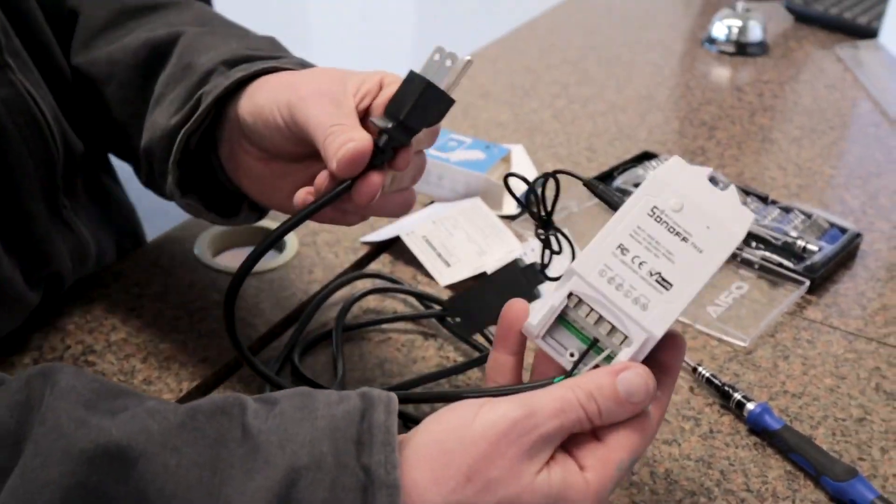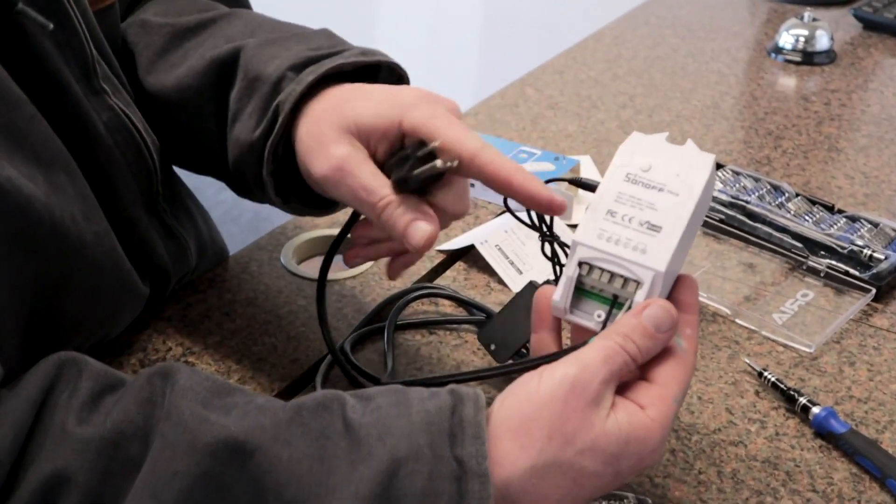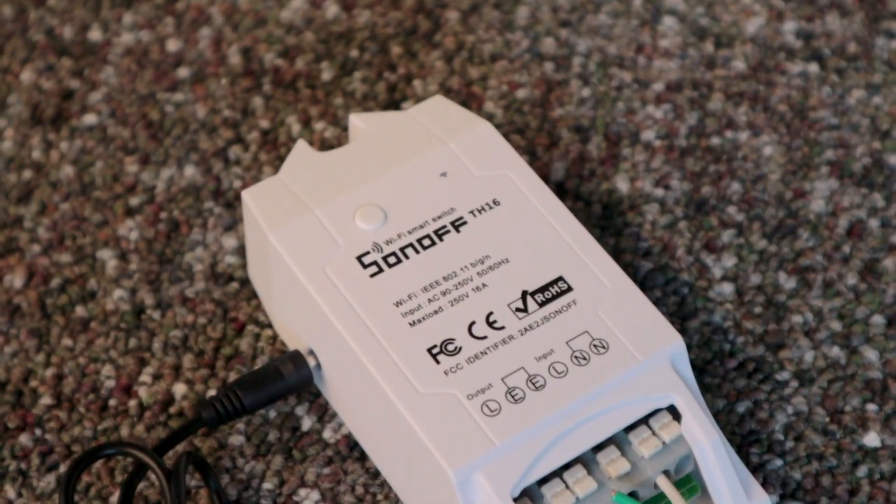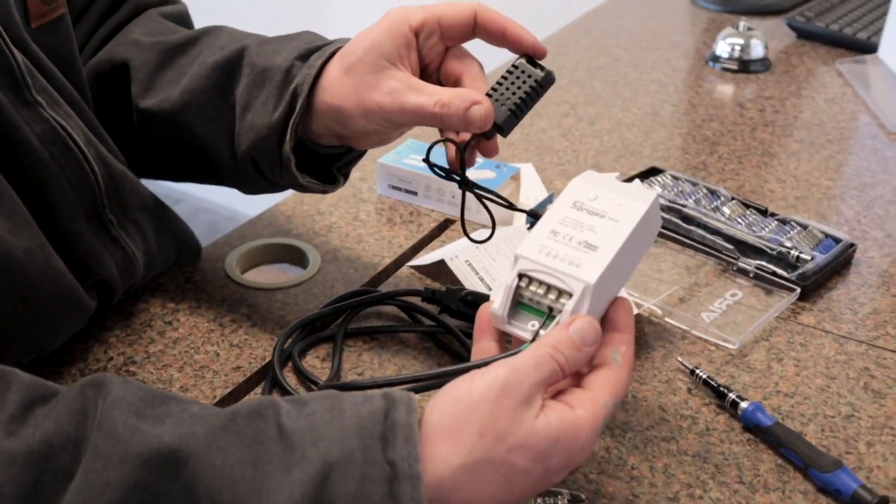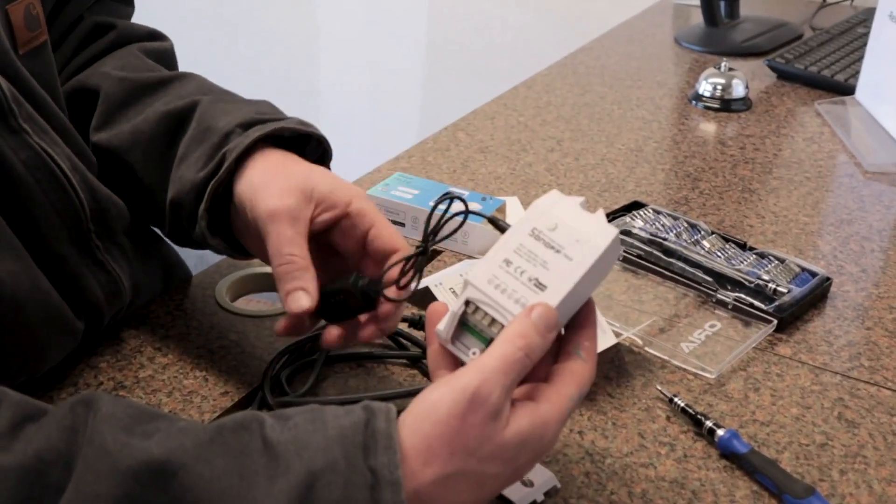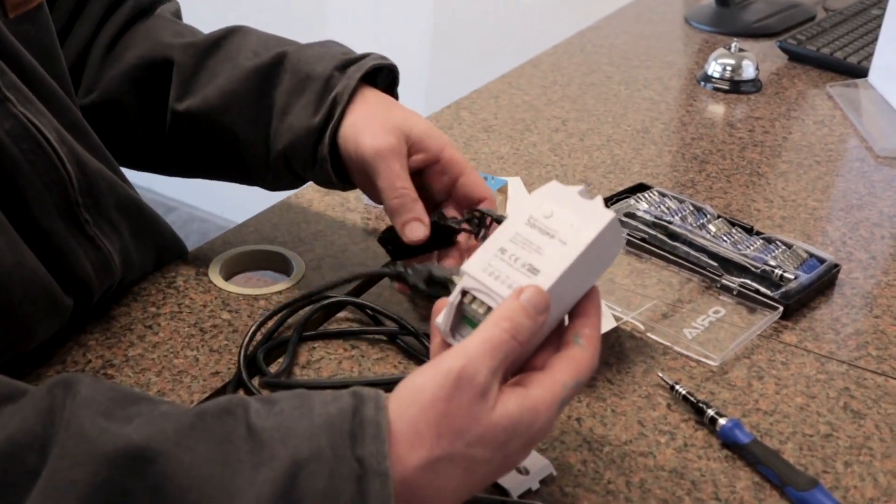But so now we're to the point where if we were to plug this in, it'll go ahead and power up. And we can then connect it to our wireless router and get this all configured. We should be able to receive sensing data for humidity and temperature from the sensor. And yeah, so I think we're going to do that now.